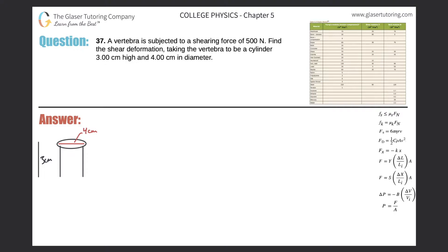Number 37. A vertebrae is subjected to a shearing force of 500 newtons. Find the shear deformation taking the vertebrae to be a cylinder 3 centimeters high and 4 centimeters in diameter.